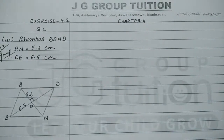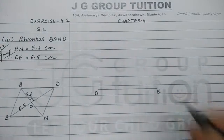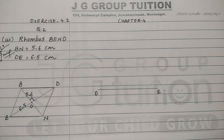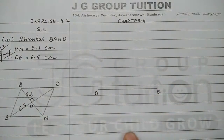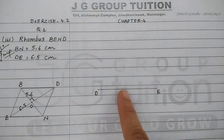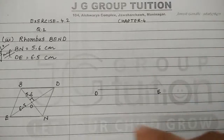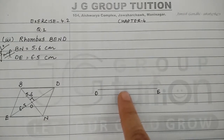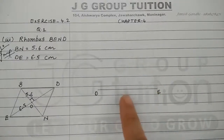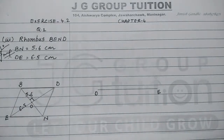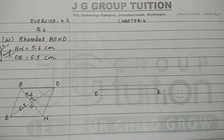That is DE, length 6.5 cm. Now the important step is how to obtain the remaining two vertices B and N. The diagonals bisect each other at a right angle, so BN must pass through the midpoint and be a perpendicular bisector of DE. A perpendicular bisector is a line that passes through the midpoint and forms a right angle. We have already discussed how to construct a perpendicular bisector in earlier classes.